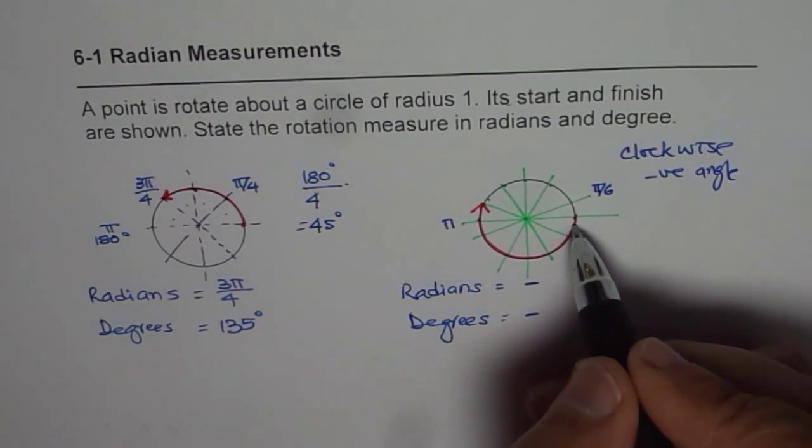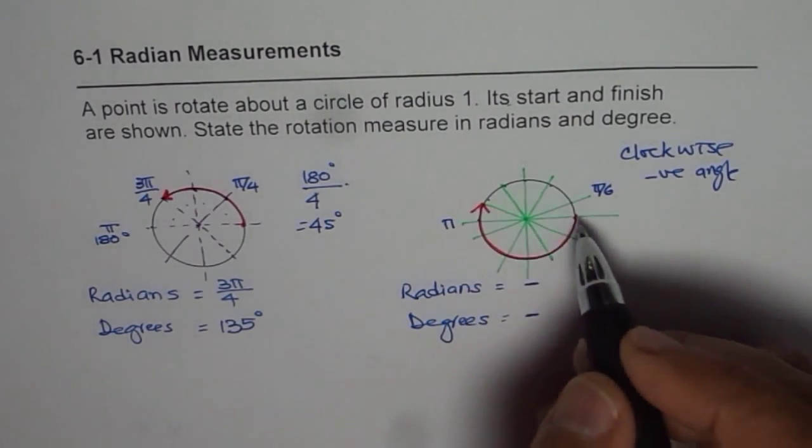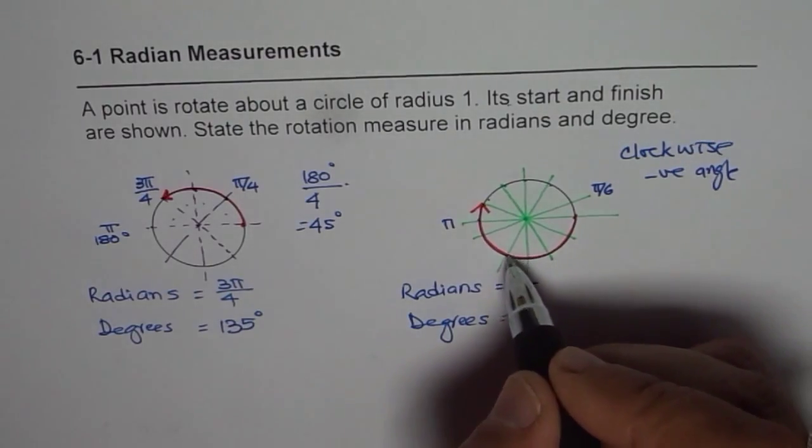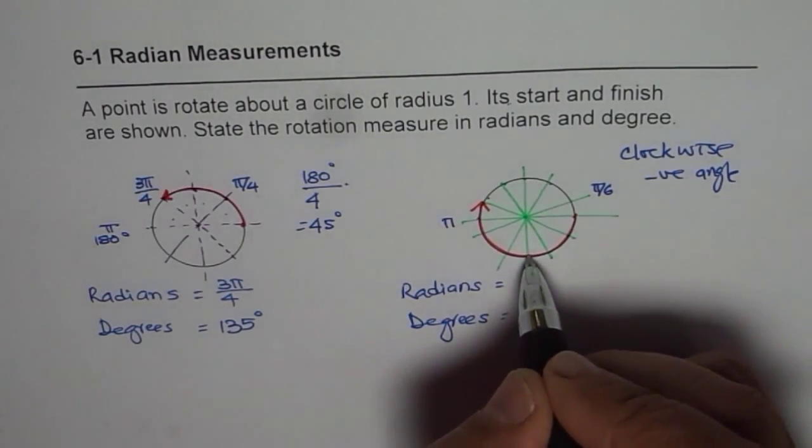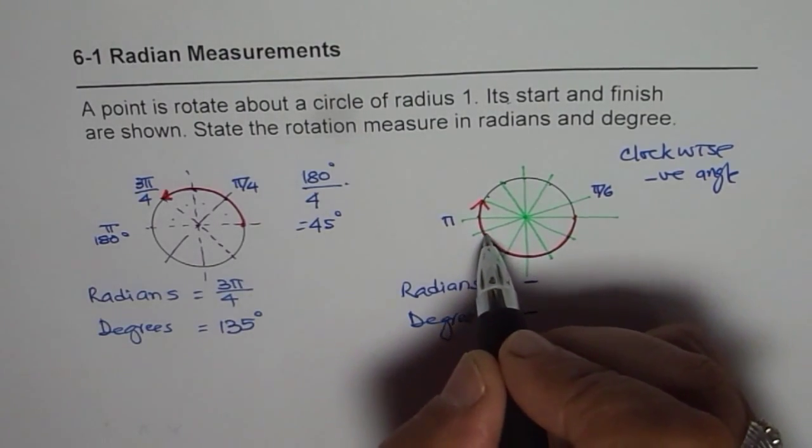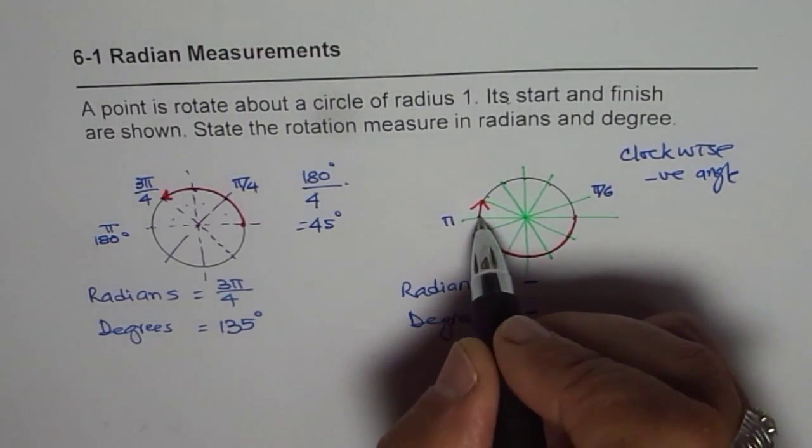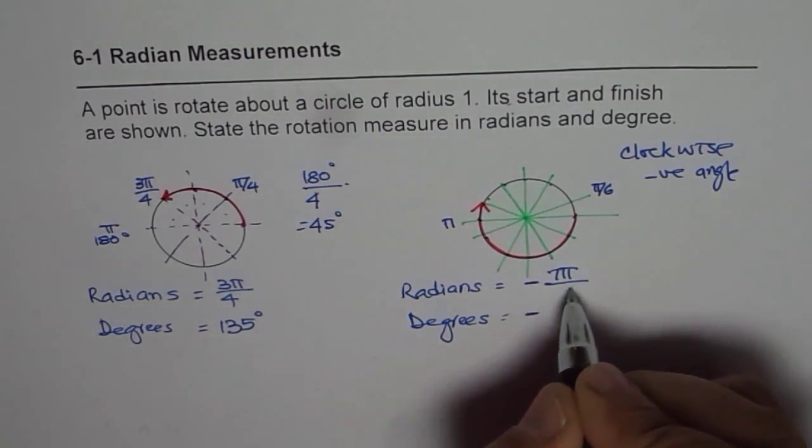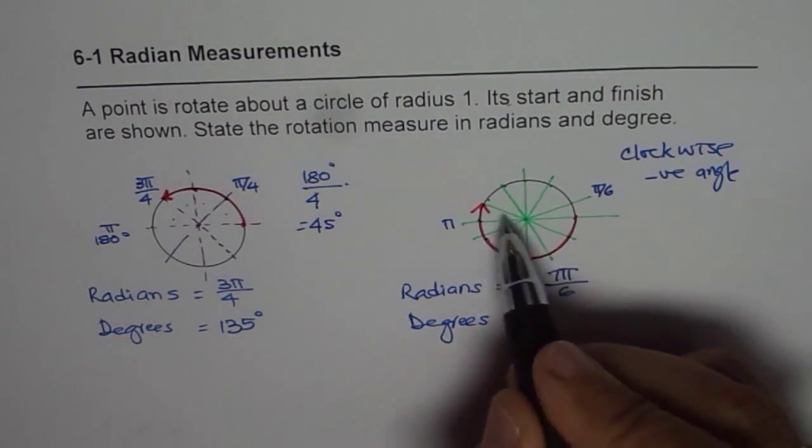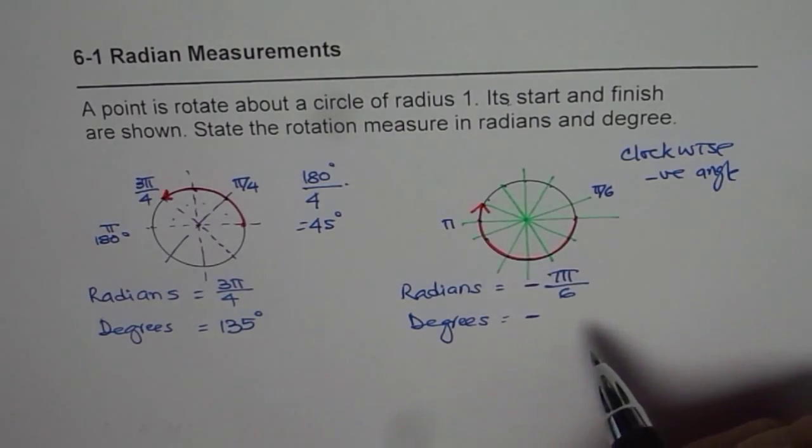Now if we are going clockwise in this way, how many pi by 6 do we have? 1 pi by 6, 2 pi by 6, 3 pi by 6, 4 pi by 6, 5 pi by 6, 6 pi by 6, and 7 pi by 6. So the answer is 7 pi by 6. That is our answer. 7 pi by 6.